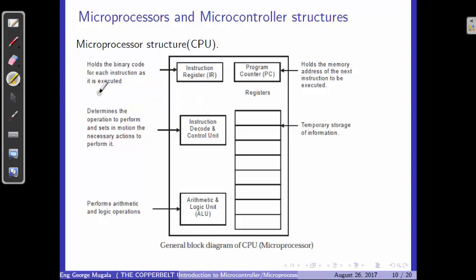What exactly is this central processing unit and what does it have inside? Look at the instruction register — the instruction register holds the binary for each instruction as it is executed. Inside the CPU we also have the program counter. The program counter holds the memory address of the next instruction to be executed. You can think of a program counter as a pointer.